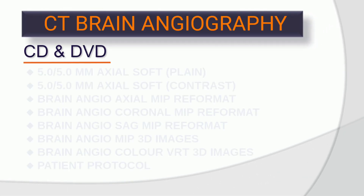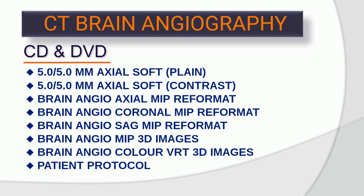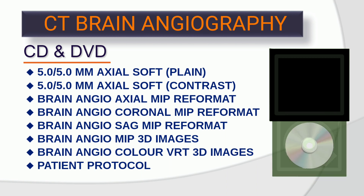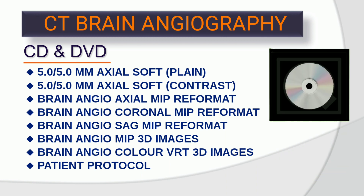Data for CD: you can give thick data on CD — 5x5 mm axial soft plane, 5x5 mm axial soft contrast, brain angio axial MIP reformat, brain angio coronal MIP reformat, brain angio sagittal MIP reformat, brain angio MIP 3D images, brain angio color VRT 3D images, and patient protocol.